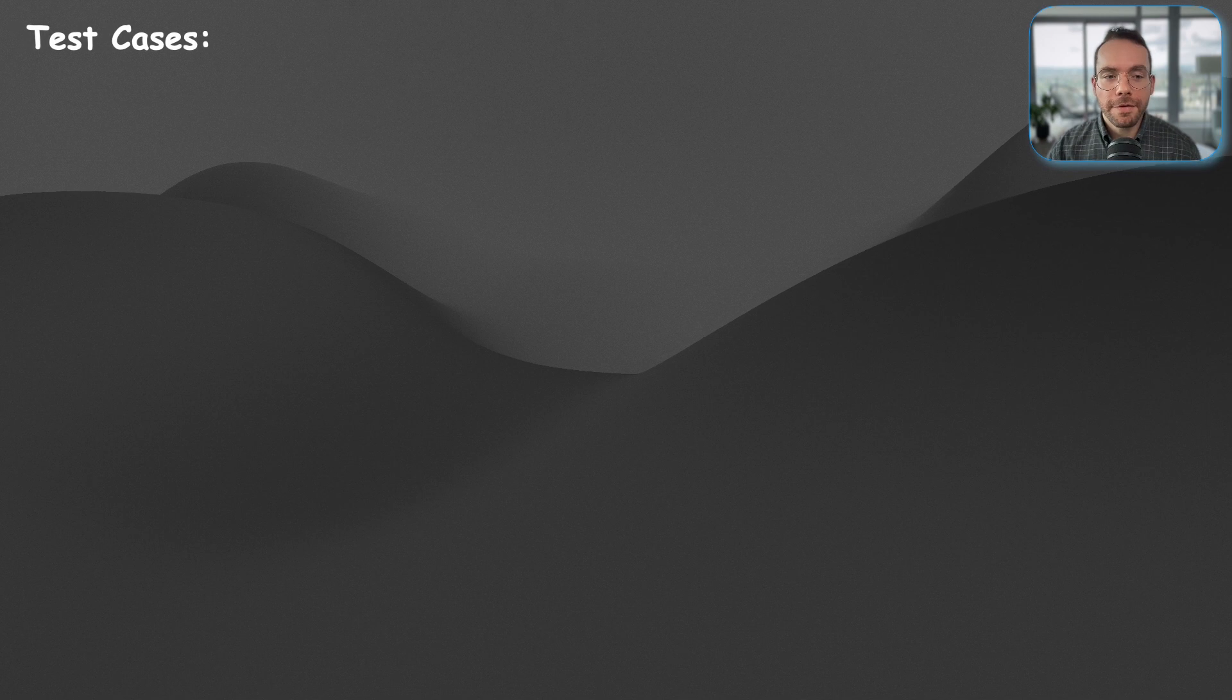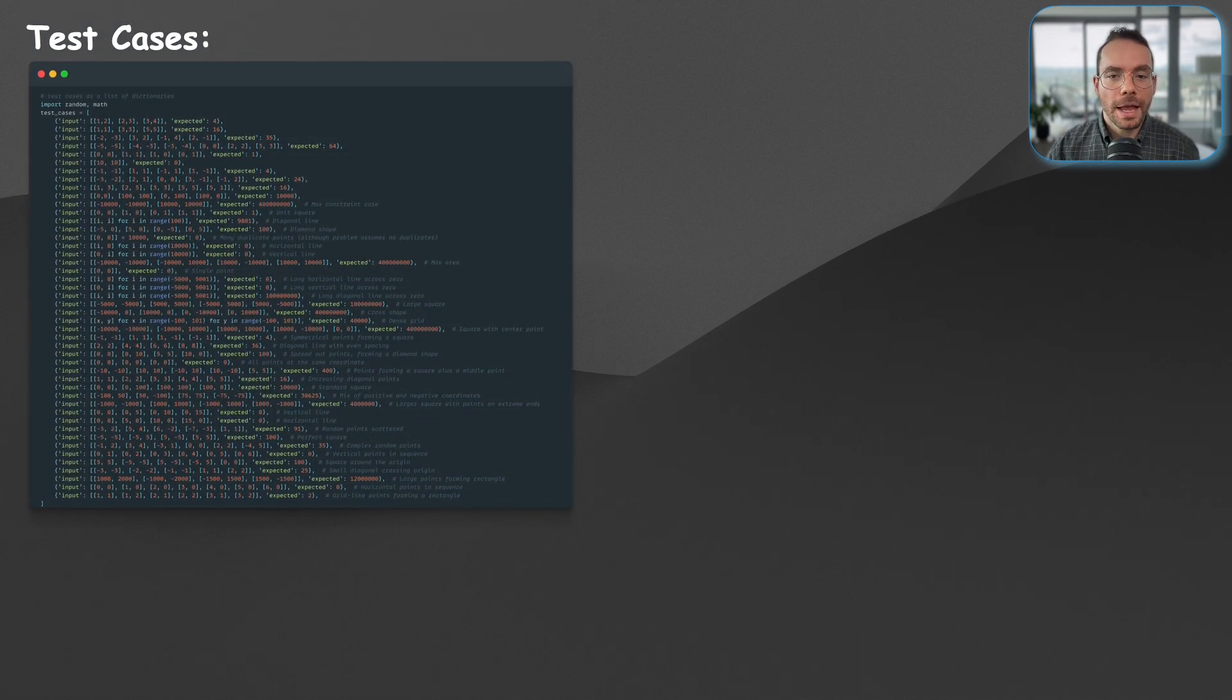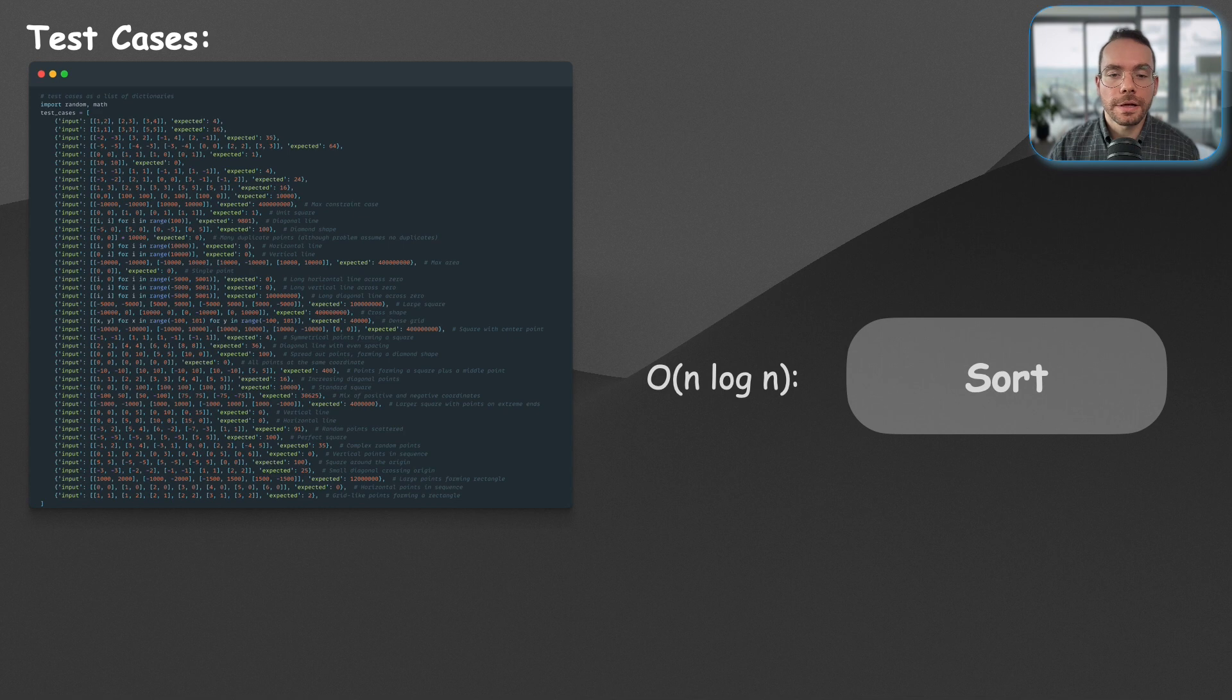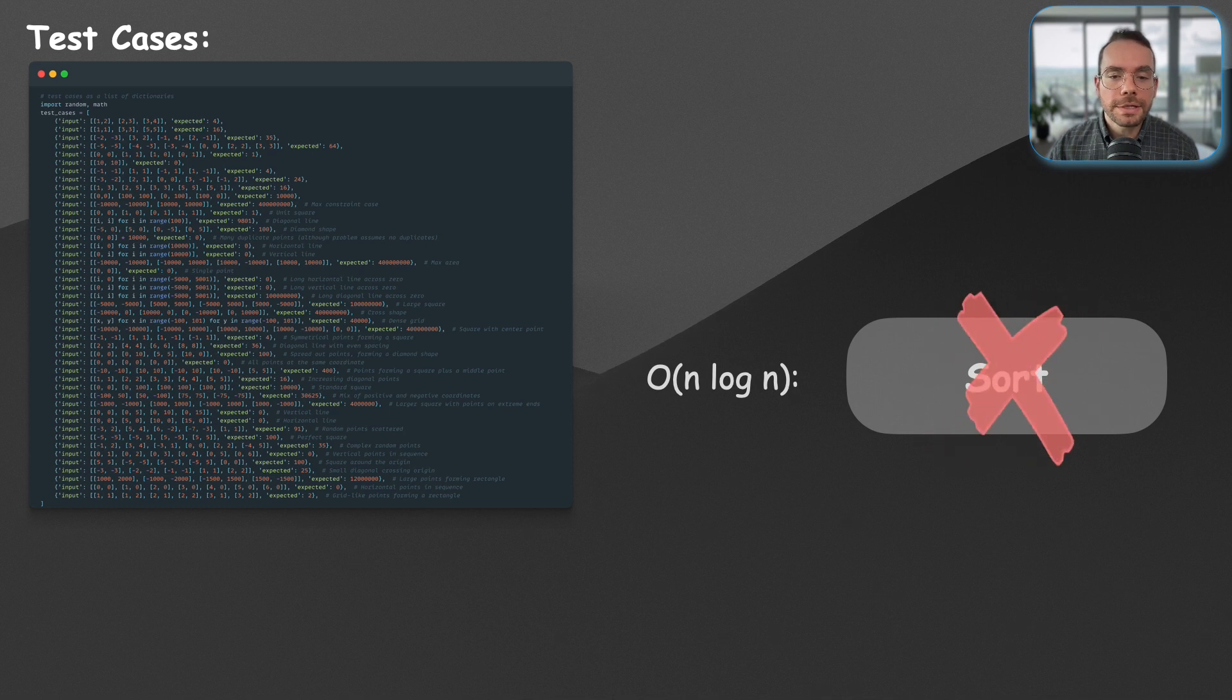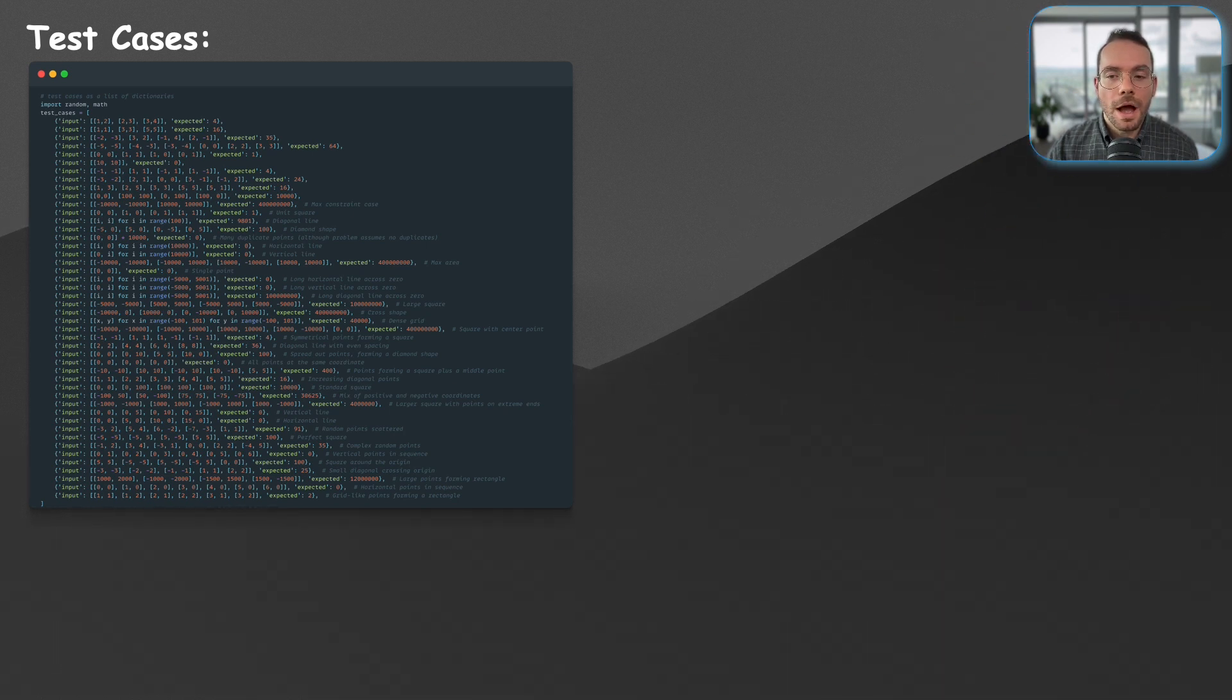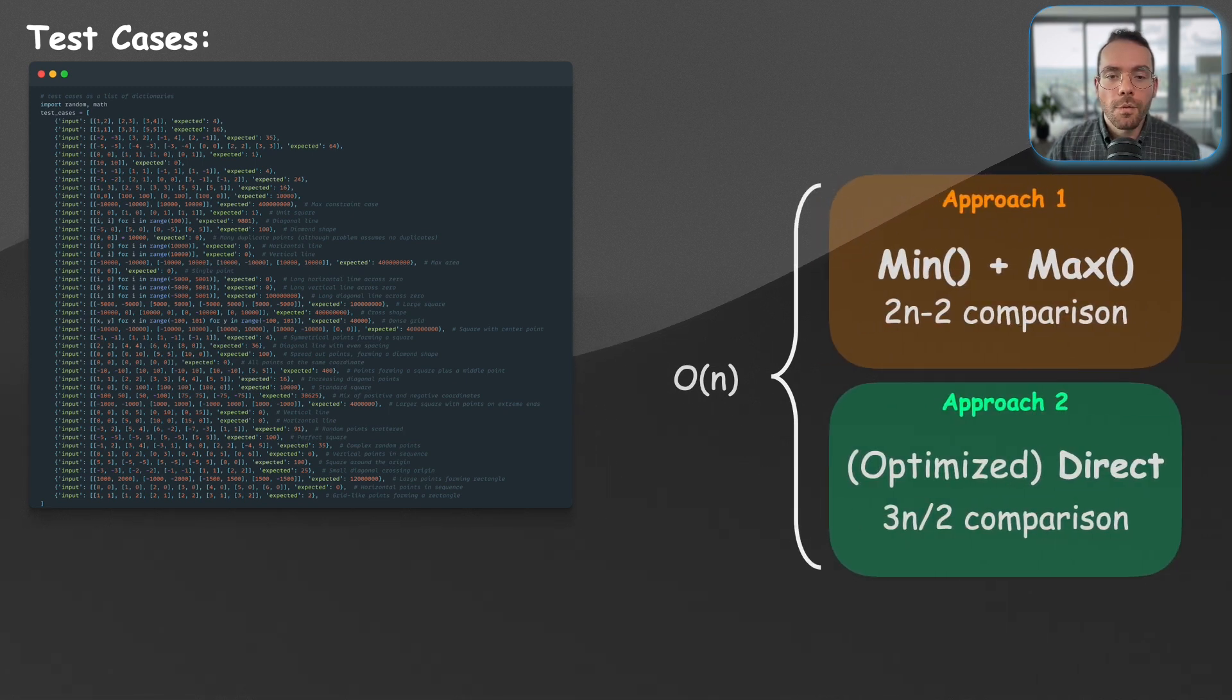Now, for evaluation purposes, let's create 50 test cases, and for the sake of comparison, we will exclude the first approach, the sort approach, because this is polynomially slower, and a more interesting comparison is going to be the other two approaches that we discussed, because both of them are linear. One of them does a little bit less comparison versus the other.